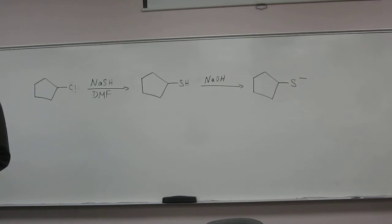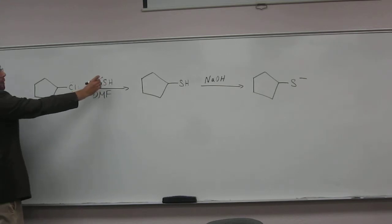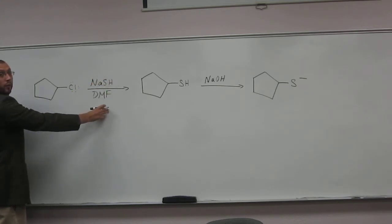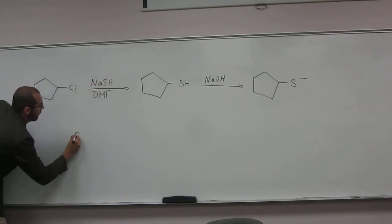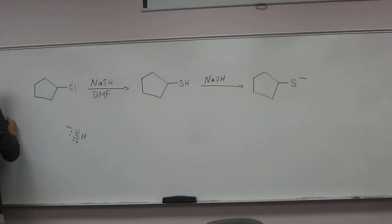So should we go over the mechanism of this step? Yes. Okay. So this step, right, what are we going to get when we put this into DMF? Any idea? The sodium is going to be a spectator ion. Uh-huh. And then the Cl, the chlorine, would be a leaving group. Very good.